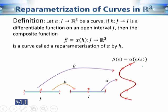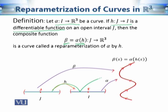So if we have a curve alpha and a differentiable function h from open interval J to open interval I, then the composite function alpha ∘ h — which takes points from J, applies h, then applies alpha — is a function from J to R³. It is known as the reparameterization of alpha by h.